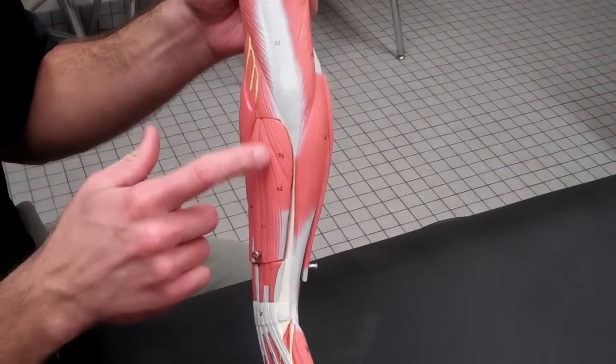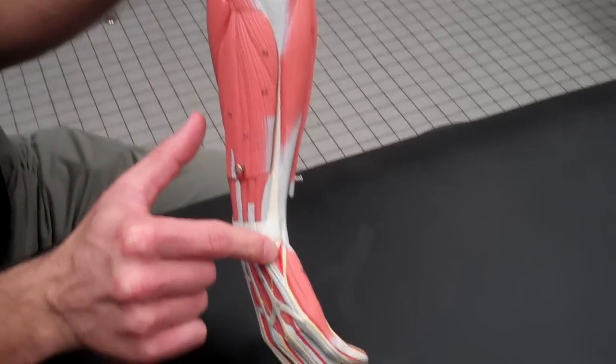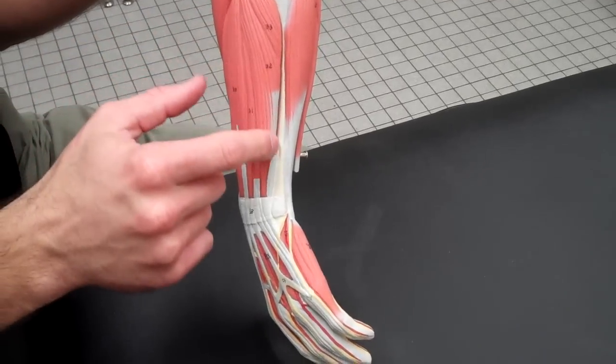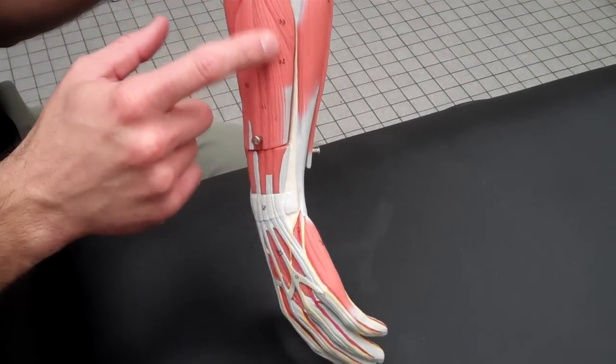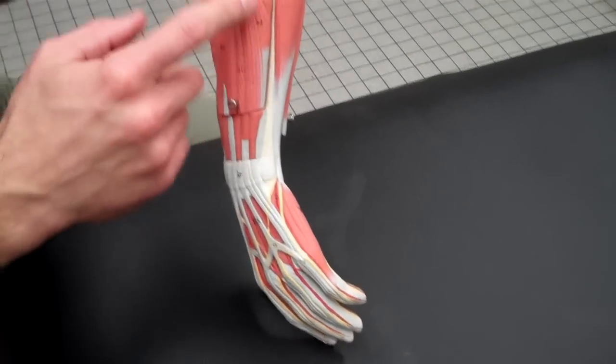If we continue to work to this side, this one right here that I'm touching, working all the way down here onto the medial side on your pinky side, is your extensor carpi ulnaris. This is on the ulnar side because it's the pinky side and extends the wrist.